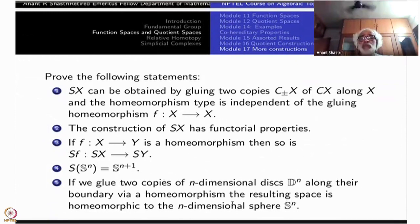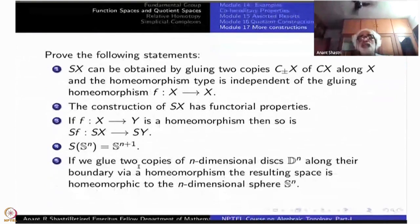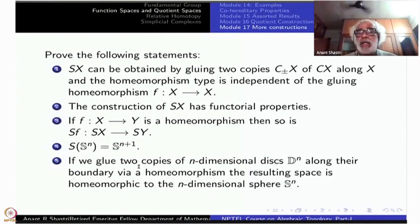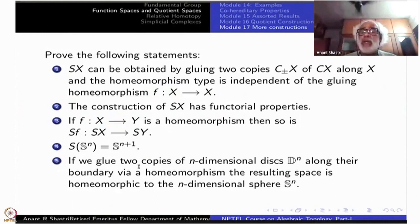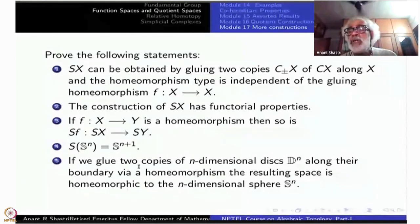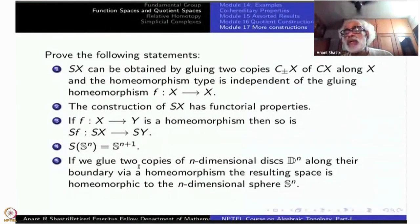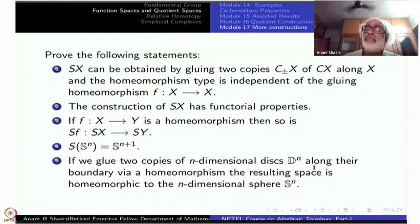It is like gluing — in the simplest case n=1 — two closed intervals and identifying the boundaries by a homeomorphism: a goes to a′, b goes to b′, and you get a circle. This generalizes to all dimensions Dⁿ. That is how S(Sⁿ) becomes Sⁿ⁺¹. You would have done this exercise already, and would have also known that the cone over the sphere is a disk of one dimension higher. Put them together and you get this result. The exercise is to write down the details for each of them.